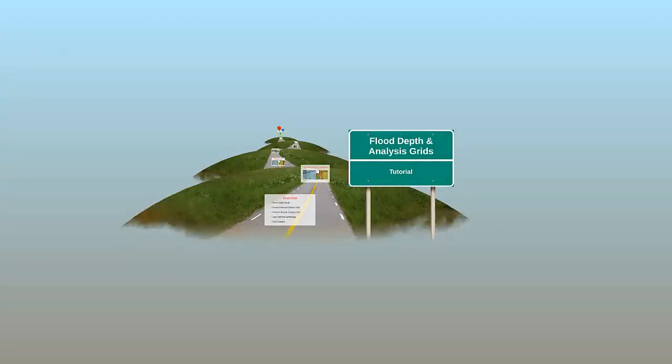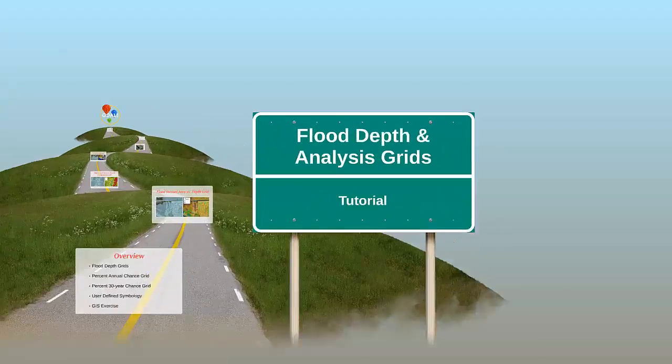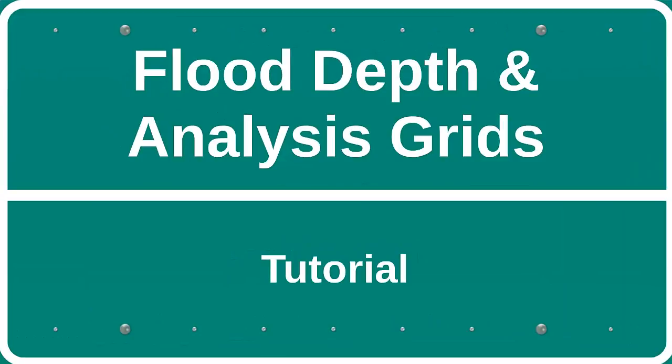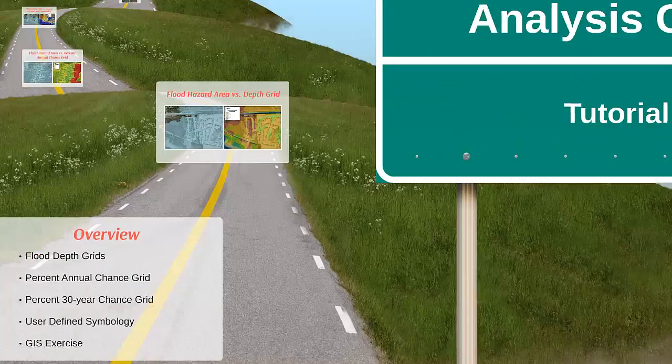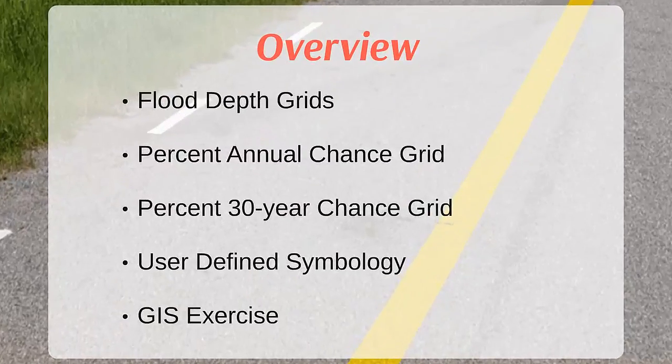In this training exercise, we will be discussing the non-regulatory flood depth and analysis grids. These grids, which are also referred to as raster datasets, provide community leaders a better way to communicate flood risk in a way that is more measurable and relatable than simply stating that a property is in or out of the regulatory floodplain. Utilizing these raster datasets properly can make them extremely powerful tools.